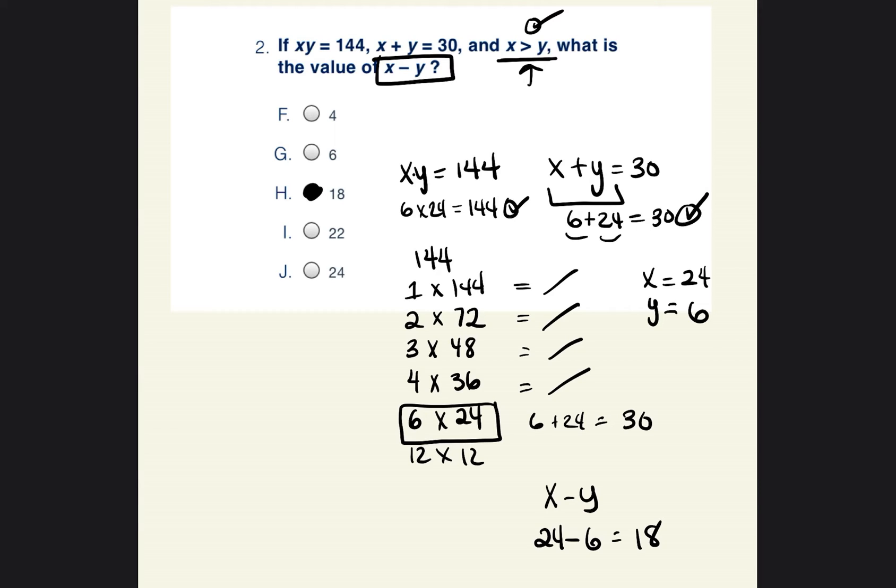So this problem took a few steps, but none of the steps were too hard. Two numbers multiply to get 144 but they add to get 30. So find the factors of 144, see which of those factors add to get 30. Then you have to make sure that whatever two numbers you choose, the x is greater than the y, because that's what this told us. And then once we can figure out what x is equal to and what y is equal to, we can go ahead and plug it into that last equation. And we were able to figure out that the answer is going to be 18.